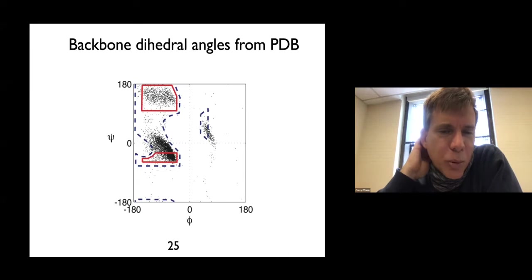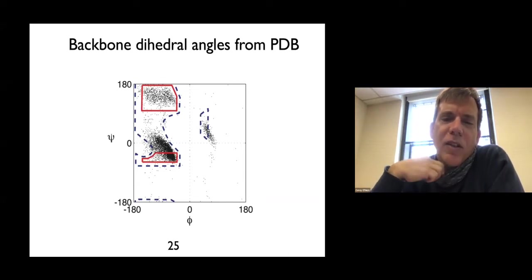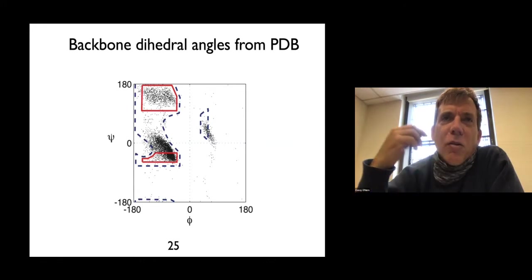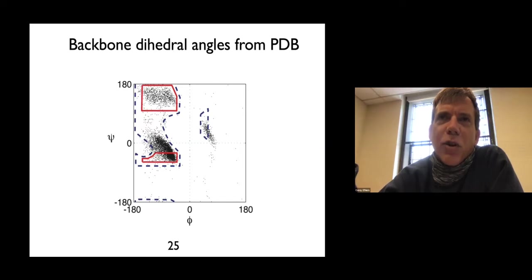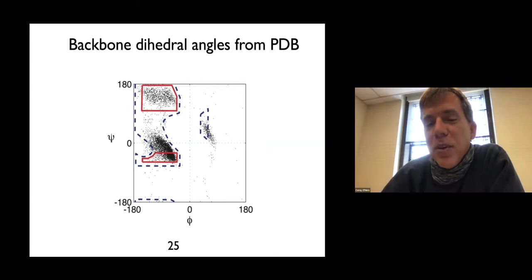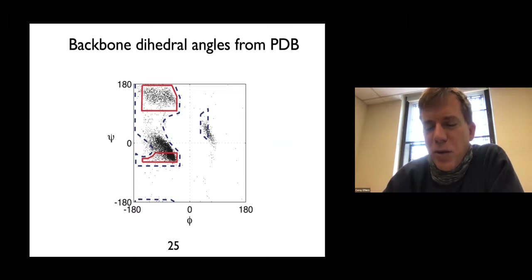Another subtlety is the density of points in the plot — they're not uniformly distributed. There's a lot of points in the lower region, which tends to be more alpha-helical structures. The question is: what causes that? Should protein force fields include a bias towards alpha-helical structure, or should I uniformly sample the allowed conformations from the Ramachandran plot? Should I sample alpha-helical conformations more — those with lower values of psi — or uniformly sample the entire allowed Ramachandran space?